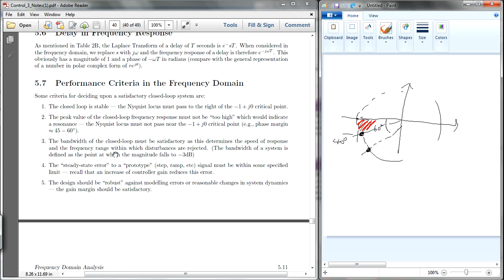The third one says that the bandwidth of the closed-loop must be satisfactory. The bandwidth is the speed of response, which disturbances are rejected. This portion I can't understand much. Hopefully in the Bode plot you may understand. So I'll just leave this one out of it first.